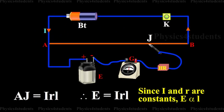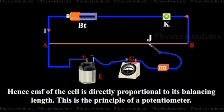Since I and R are constants, E is proportional to L. Hence, the EMF of the cell is directly proportional to its balancing length. This is the principle of a potentiometer.